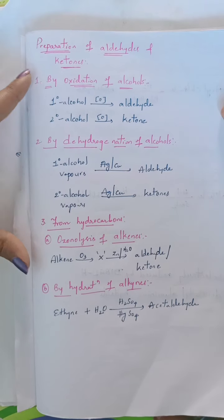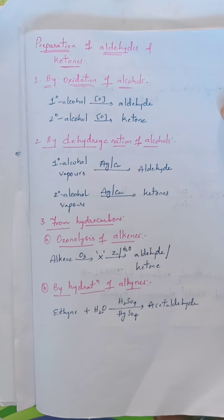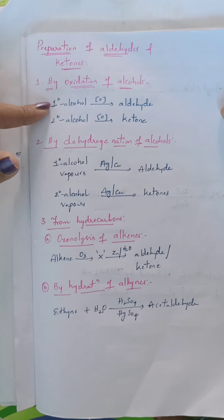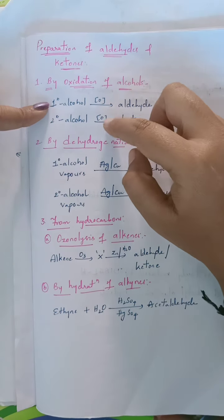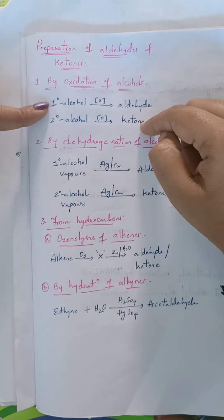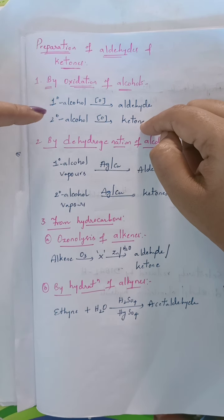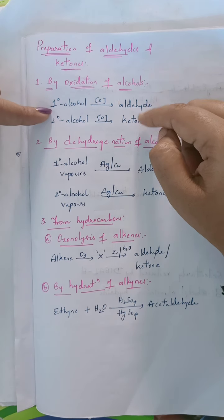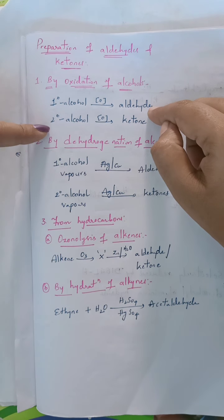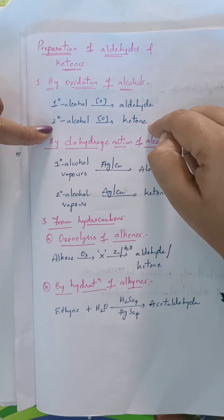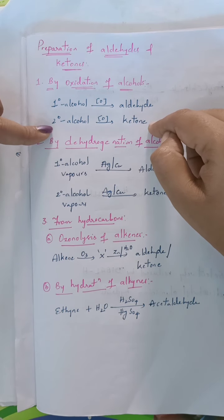Using three important methods we can prepare both aldehydes and ketones. The first method is by oxidation of alcohols. When alcohols undergo oxidation they can be converted into aldehydes and ketones — primary alcohols give aldehydes, and secondary alcohols give ketones.